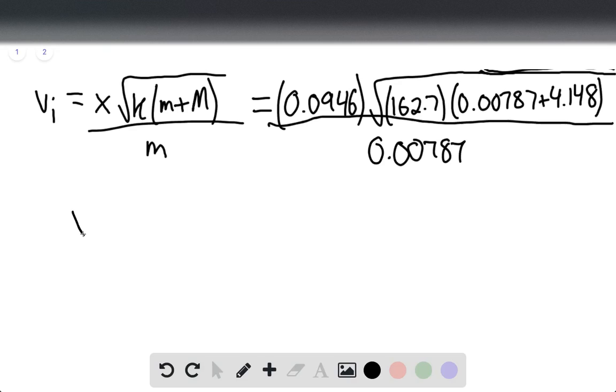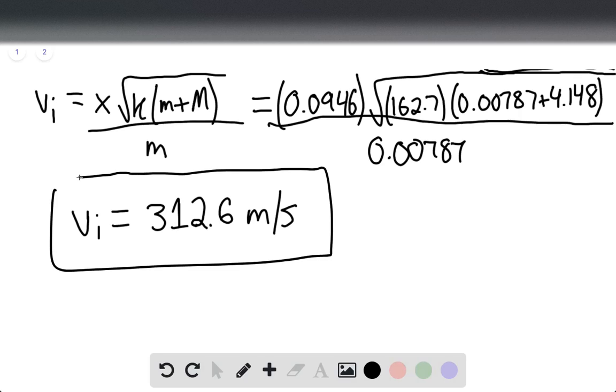We find that the initial velocity of the bullet equals 312.6 meters per second. This is our final answer. That's the end of the solution. Thank you for watching.